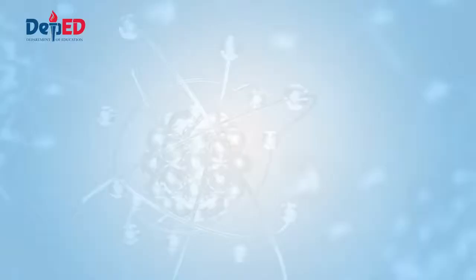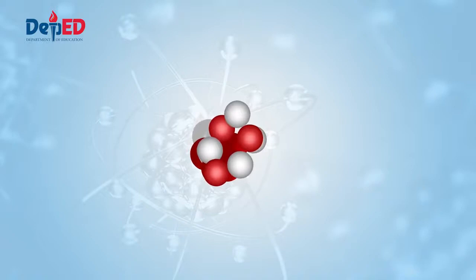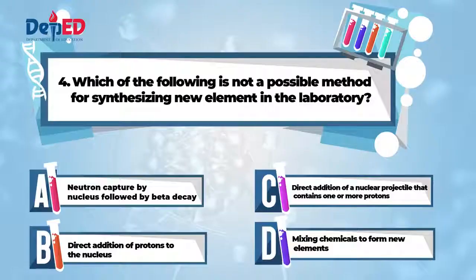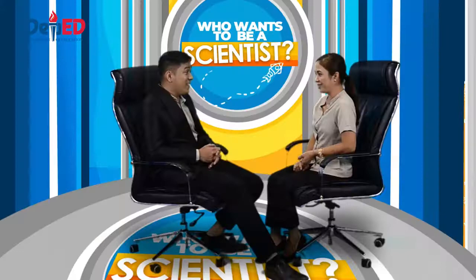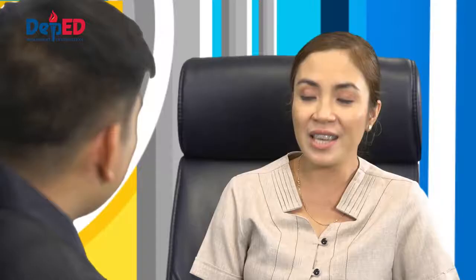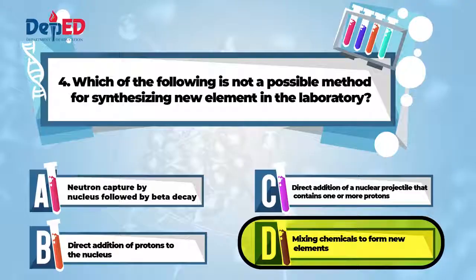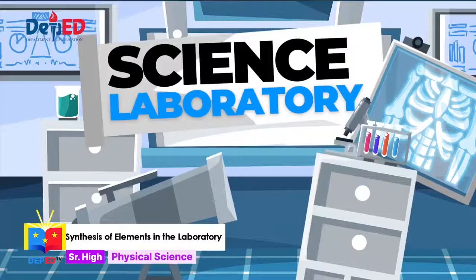B is also not the answer because if proton is added into the nucleus, it will become a new element. The same is true with C. When projectiles like deuteron, alpha particle, and other nuclei are added to the nucleus, new elements can be synthesized. Since the question is not a possible method, then my answer is letter D. Because mixing new chemicals does not form new elements. Letter D. Mixing chemicals to form new elements. Is that your final answer? Yes, that's my final answer. Let's see. Letter D is correct! Congratulations, Ma'am Lea. You have won your school a new science laboratory. I'm pretty sure your school is very proud of you.